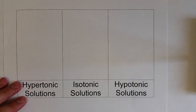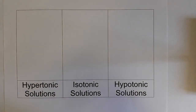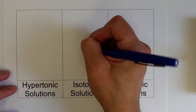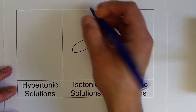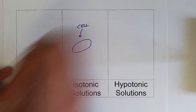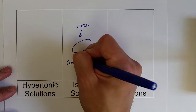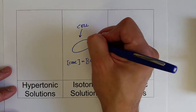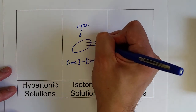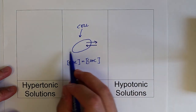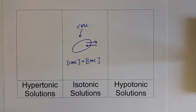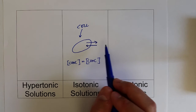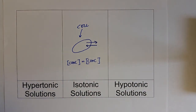Let's look at the three types of scenarios that can occur for cells in different concentration solutions. The first is an isotonic solution, where the concentration inside the cell is the same as the concentration outside the cell. In this case, water flows into and out of the cell at the same rate, so no osmotic pressure develops.